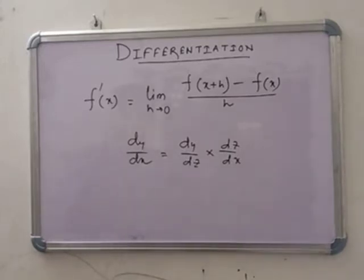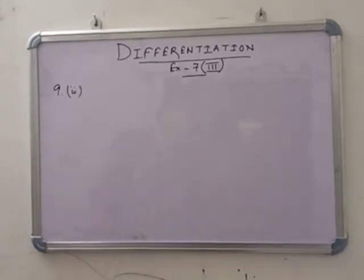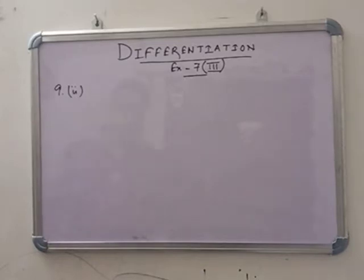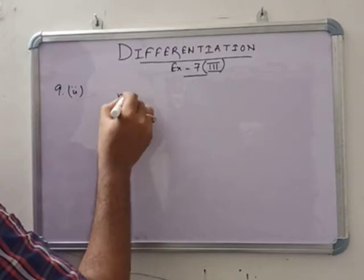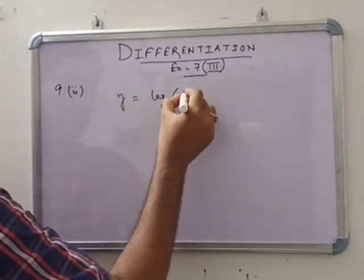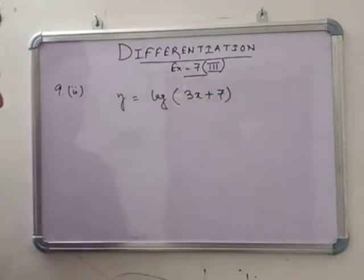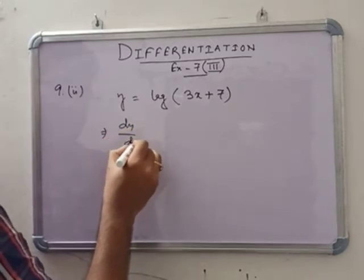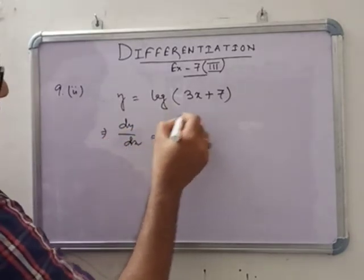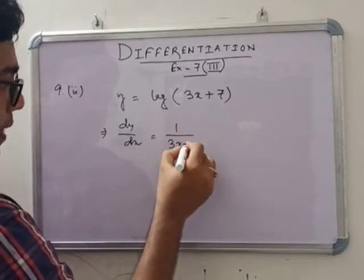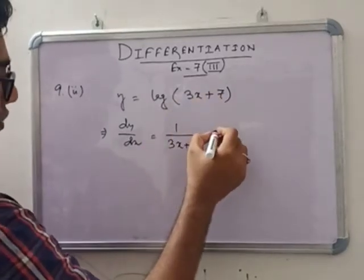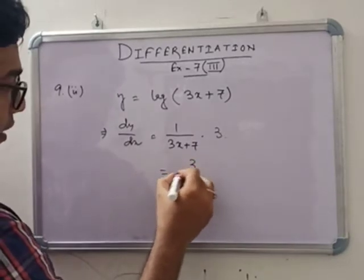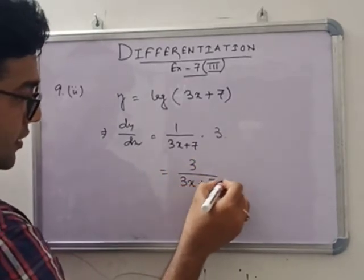Starting exercise 7.2 from number 9. Given y = log(3x + 7), we find the derivative. dy/dx equals 1/(3x+7) for the log part, multiplied by the derivative of (3x+7) which is 3. So the answer is 3/(3x + 7).